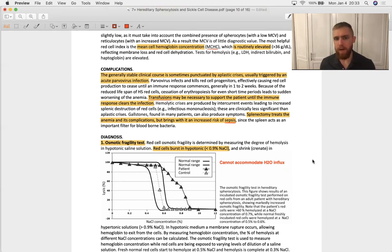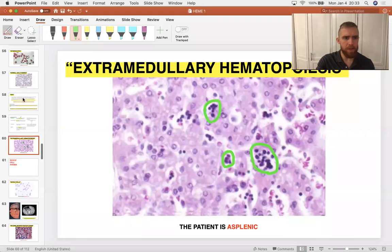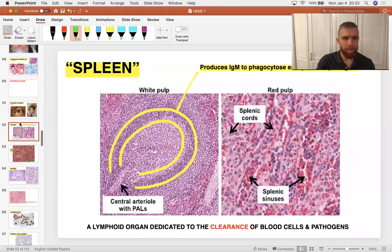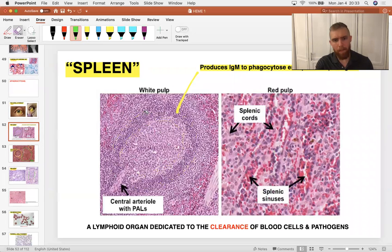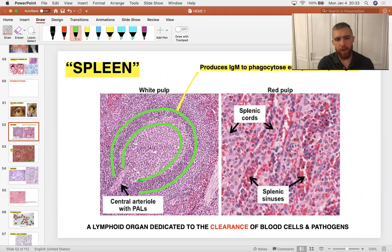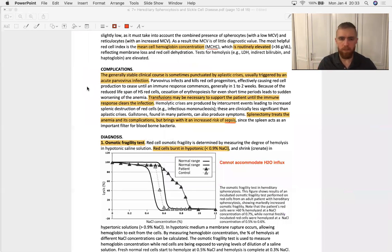Splenectomy does treat the anemia, you won't be popping open these spherocytes anymore, but if you take the spleen out, the spleen is in charge of yanking encapsulated bacteria out of the blood. Remember these periarteriolar lymphatic sheaths of the white pulp of the spleen, there's a ton of B lymphocytes in there, they can turn into a plasma cell at a moment's notice and start making some IgM which is very good at phagocytosing encapsulated bacteria. So strep pneumo, most common encapsulated bacteria, we also have haemophilus in this area, correct.